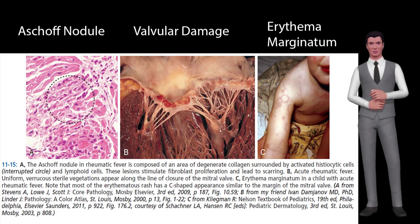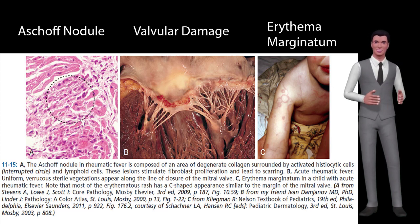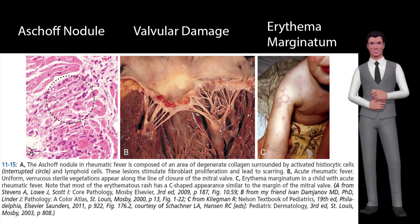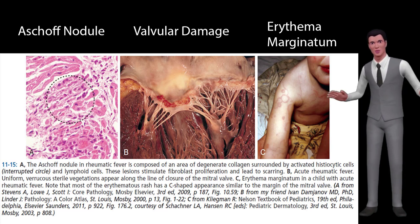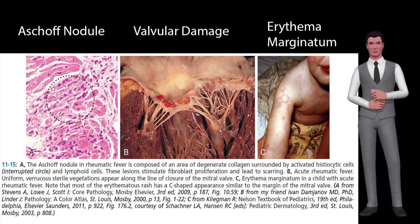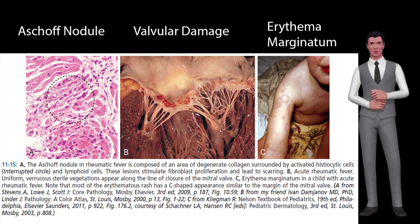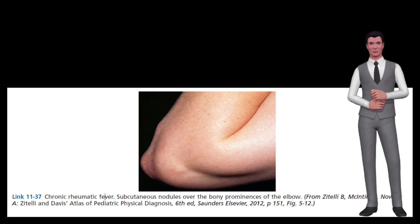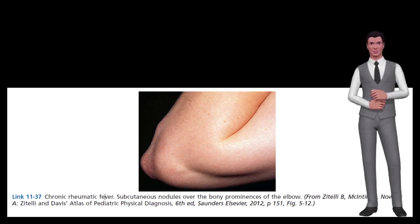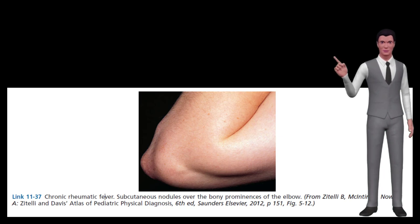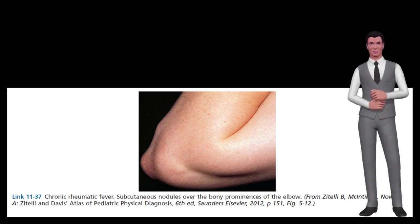Chronic rheumatic heart disease (RHD) is characterized by repeated inflammation with fibrinous repair. The cardinal anatomic changes of the valve include leaflet thickening, commissural fusion, and shortening and thickening of the tendinous cords. Aschoff bodies are present in myocardial tissue; these lesions have a central area of fibrinoid necrosis surrounded by Anitschkow cells and reactive histiocytes. Subcutaneous nodules occur in approximately 10% of cases on the extensor surfaces of the forearms, with centers showing fibrinoid necrosis, very similar to those seen in rheumatoid arthritis (RA).